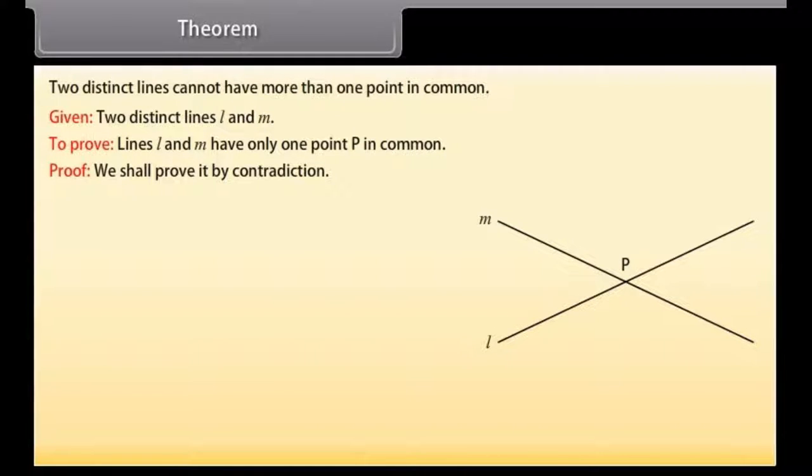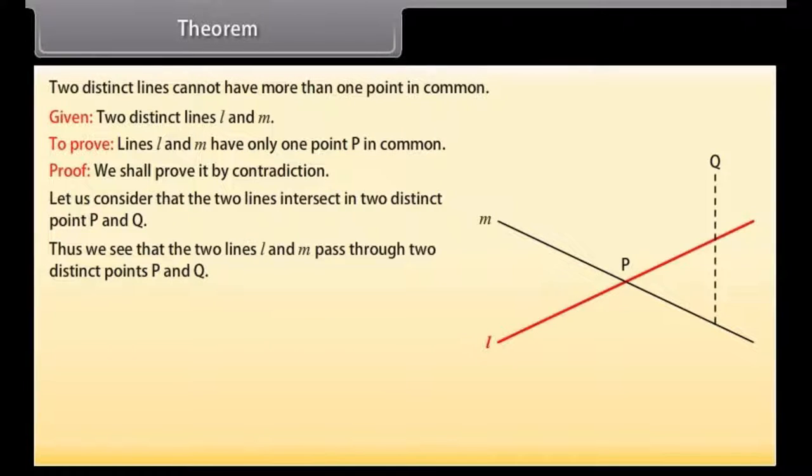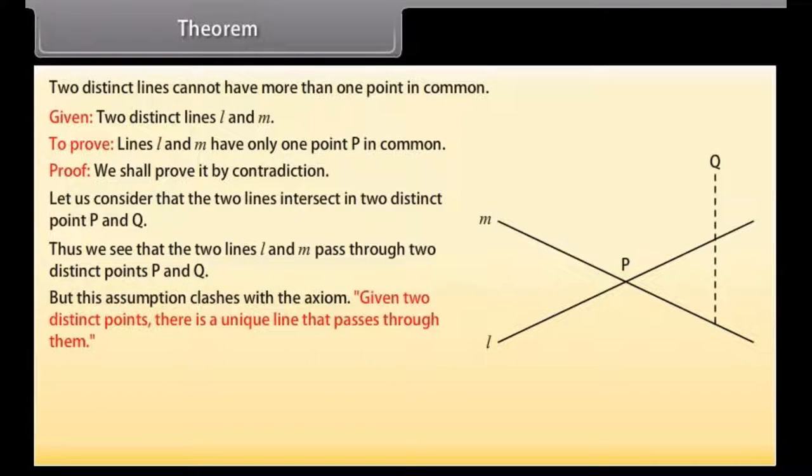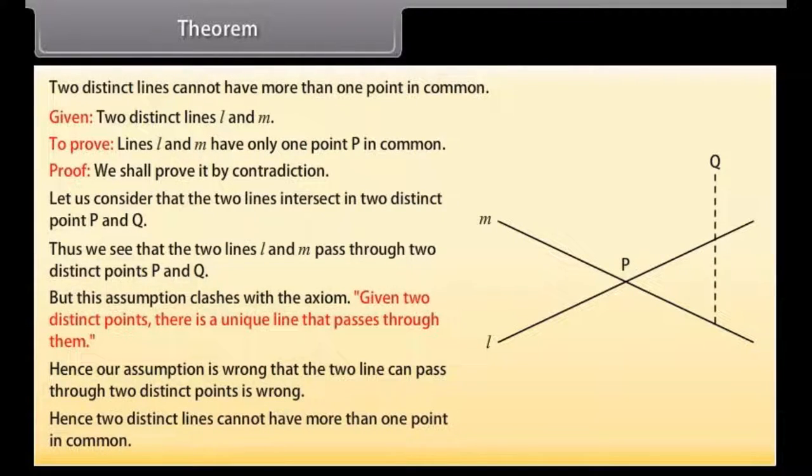Some of the propositions are constructions. Let us consider that two lines intersect in two distinct points P and Q. Thus, we see that the two lines L and M pass through two distinct points P and Q. But this assumption clashes with the axiom: Given two distinct points, there is a unique line that passes through them. Hence, our assumption is wrong that the two lines can pass through two distinct points. Hence, two distinct lines cannot have more than one point in common.